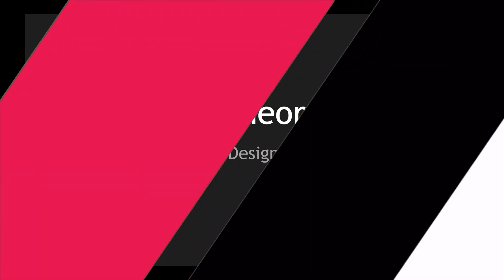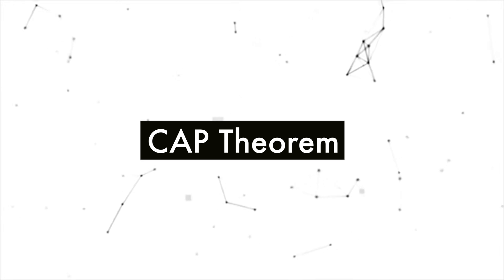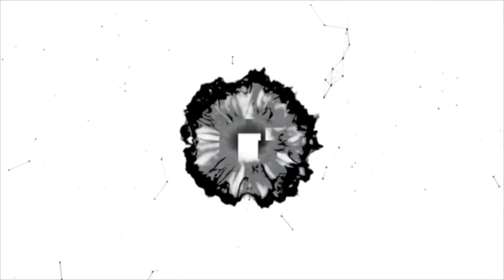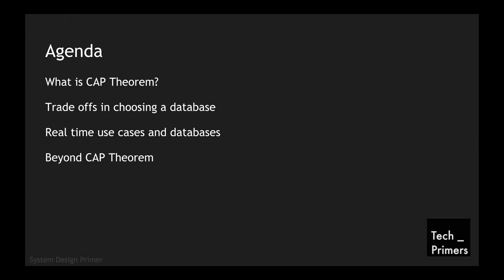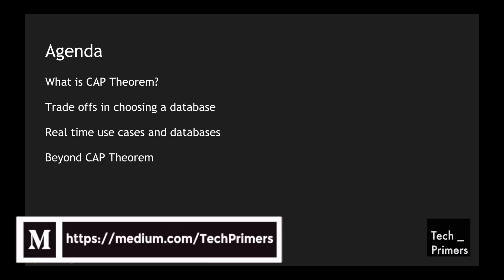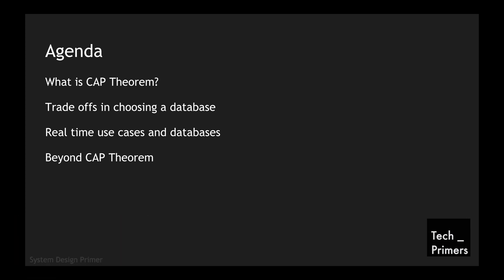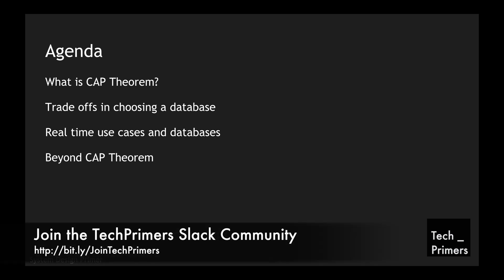Let me walk you through the agenda so you can decide whether to watch this video. We'll start with what CAP theorem is, then look at trade-offs in choosing a database using in-depth use cases with real-life examples. Finally, we'll explore what is beyond CAP theorem and whether it's sufficient for choosing a database. Timelines are mentioned in the description so you can skip to any section.